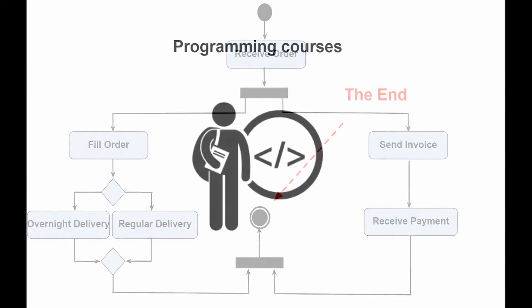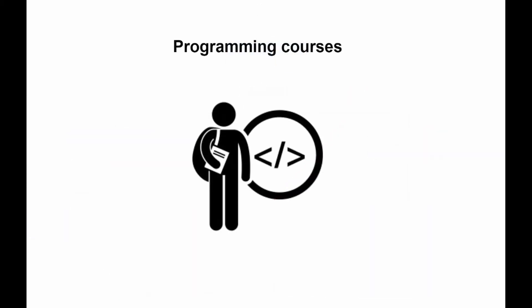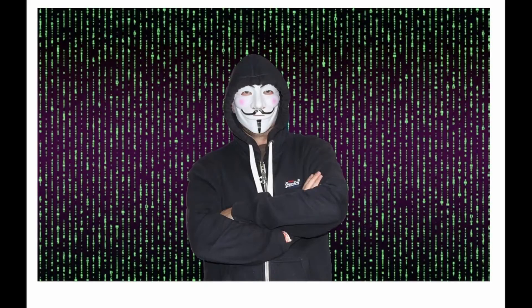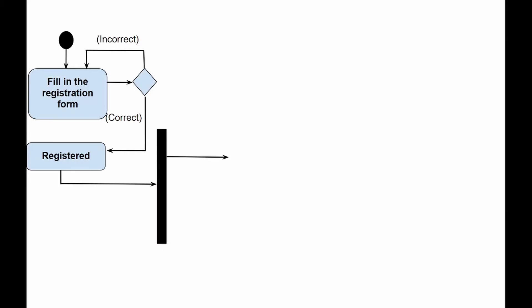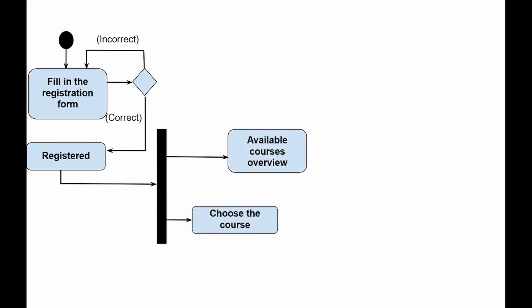Another example is the process for student enrollment in programming courses. A student decides that he or she wants to become a super coding guru, goes online, discovers some online courses, and commits to enroll. Then fills in the registration form on the company's website. If the form is filled in correctly, the student is registered. If not, the student is notified to correct the errors and try again. After that, the student can check out a free introductory course, and after completing or skipping it, can start the full-fledged course straight away. Finally, the student needs to pay for the course. Success!